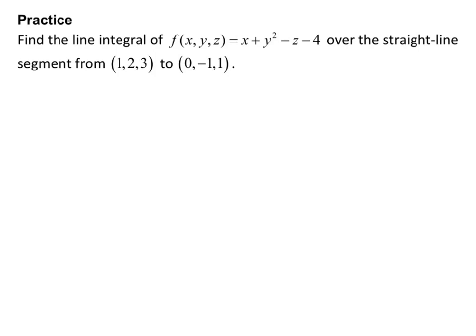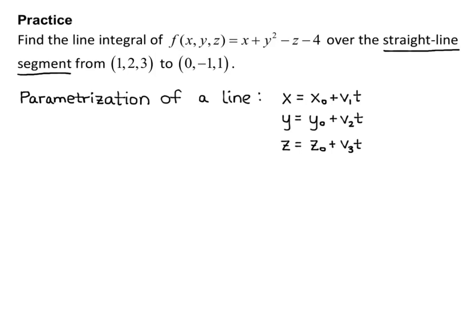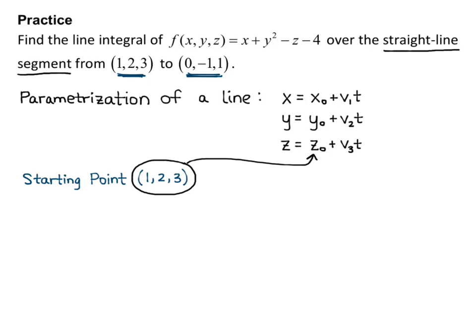So what we want to do first is come up with r(t). I notice they say straight line segment, and I remember from unit 1 that the parametrization of a line is x = x₀ + v₁t, y = y₀ + v₂t, and z = z₀ + v₃t. Now I have the starting point (1, 2, 3) and ending point (0, −1, 1), so I'll write those down. My starting point (1, 2, 3) is going to be my x₀, y₀, z₀.